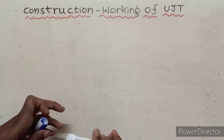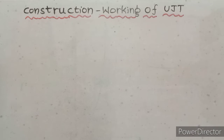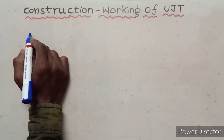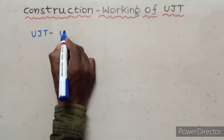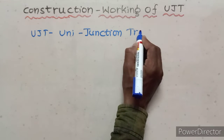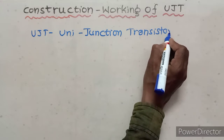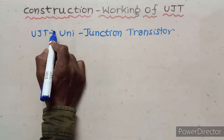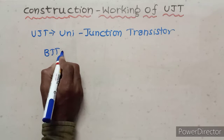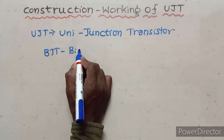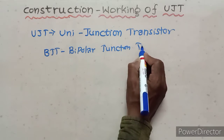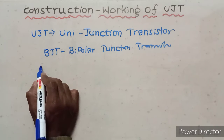Students, now we are going to discuss the construction and working of UJT. The full form of UJT is Uni Junction Transistor. First of all, BJT stands for Bipolar Junction Transistor. Next, FET stands for Field Effect Transistor. Already we know these two transistors.